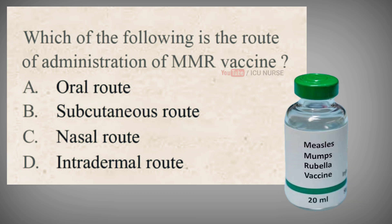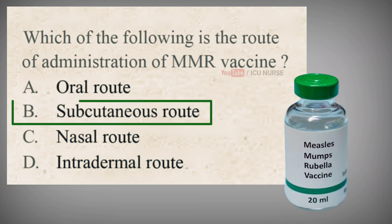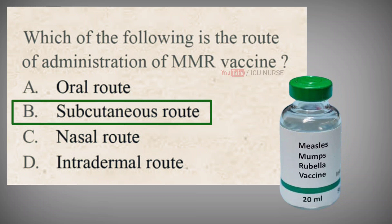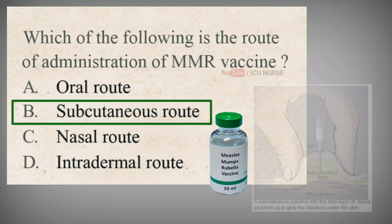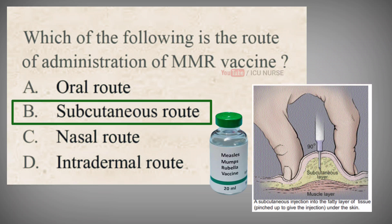Which of the following is the route of administration of MMR vaccine? A. Oral route, B. Subcutaneous route, C. Nasal route, D. Intradermal route. The correct answer is B. Subcutaneous route.